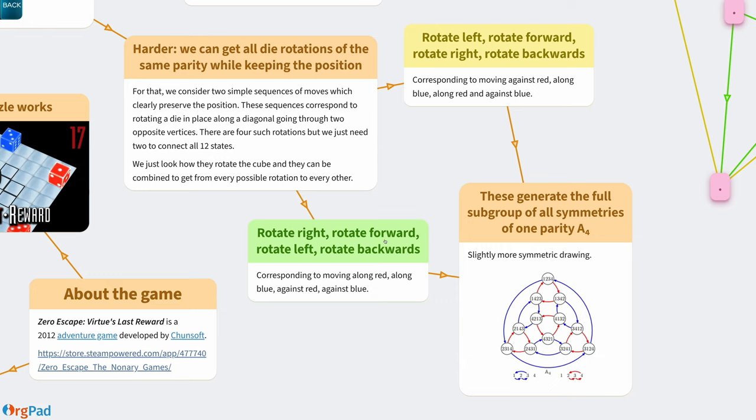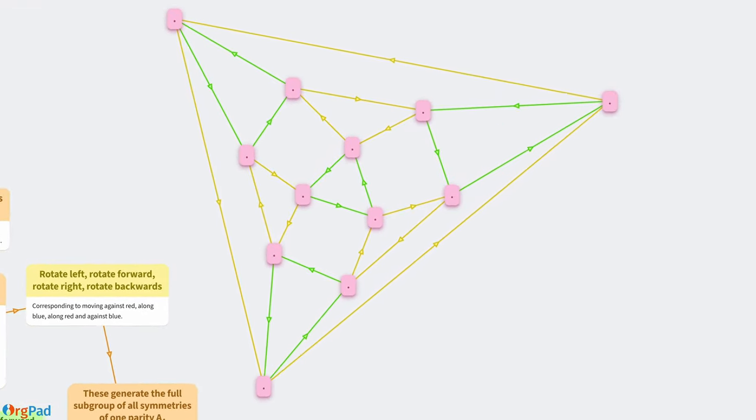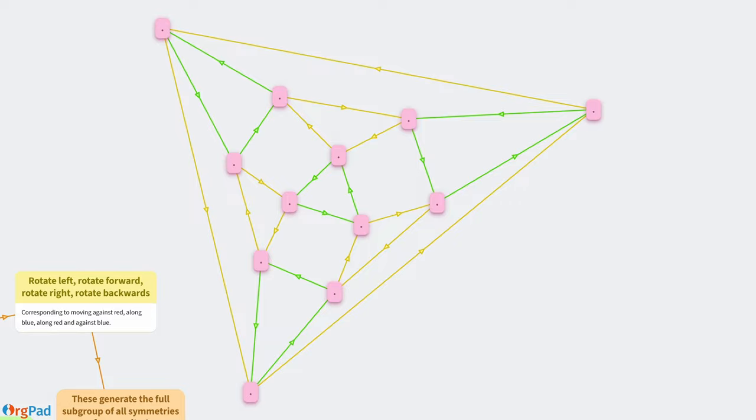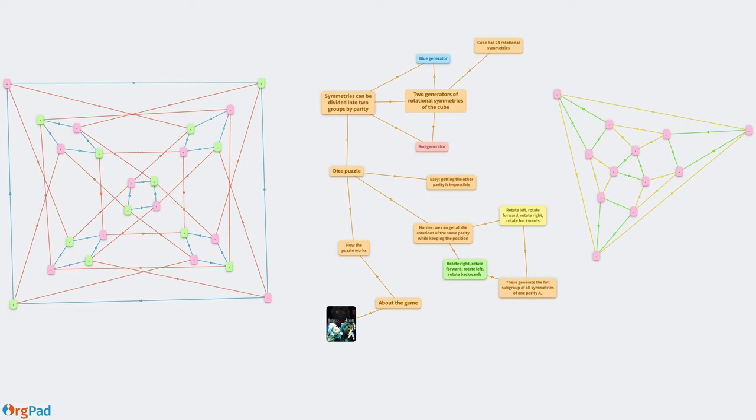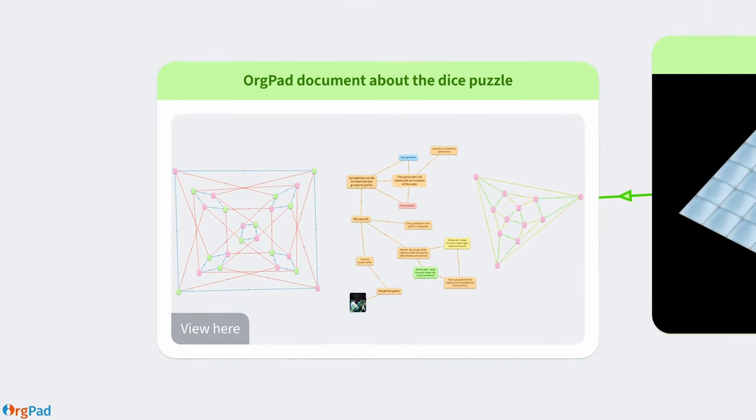When we apply a single of these 4 move sequences repeatedly, we cycle through 3 different rotations of the dice. But when we apply both of them, all 12 possible rotations can be reached. The structure is again depicted by a Cayley graph. If you are interested in more details, let me know in the comments. I can make a longer video about this problem and group theory.